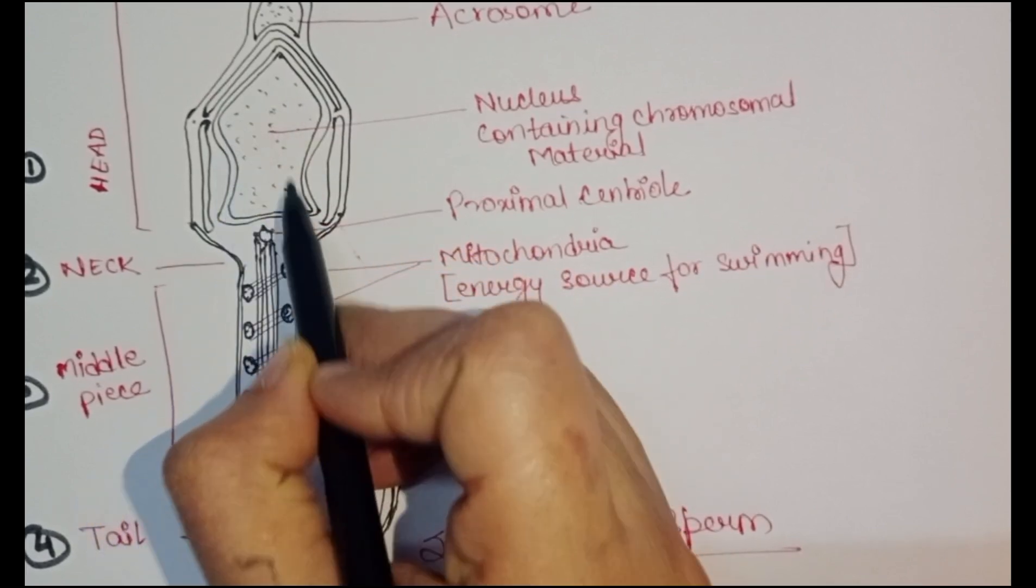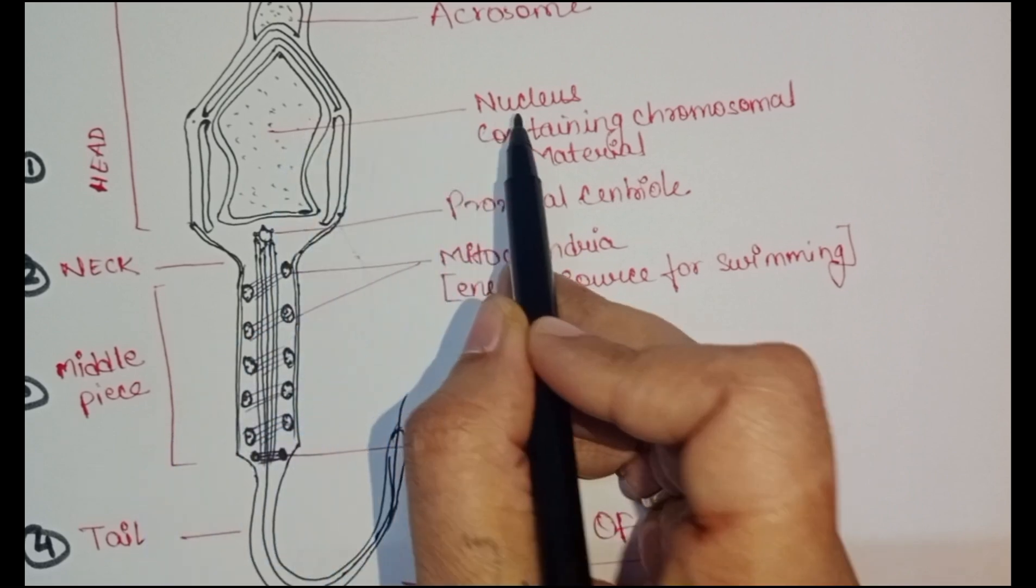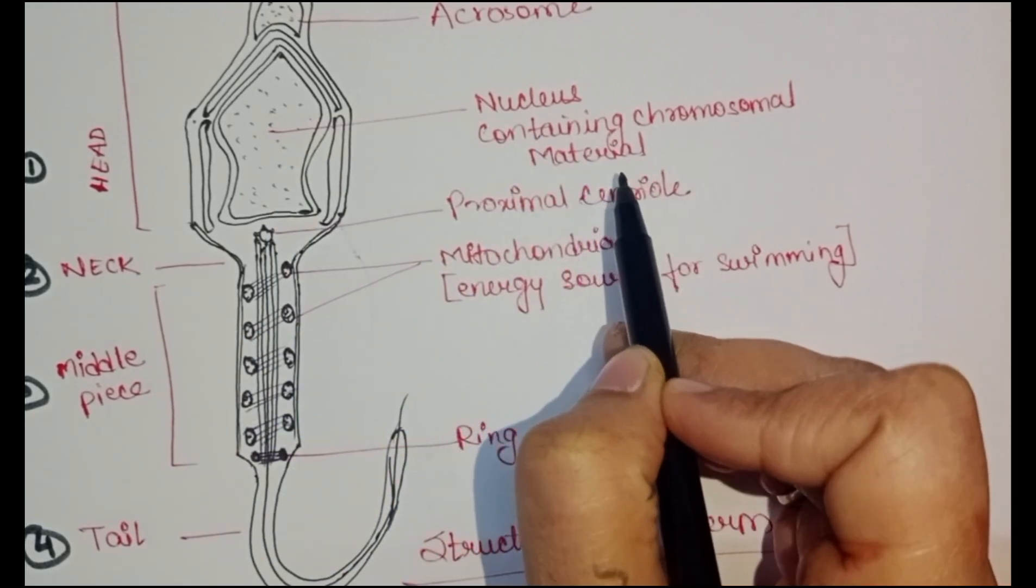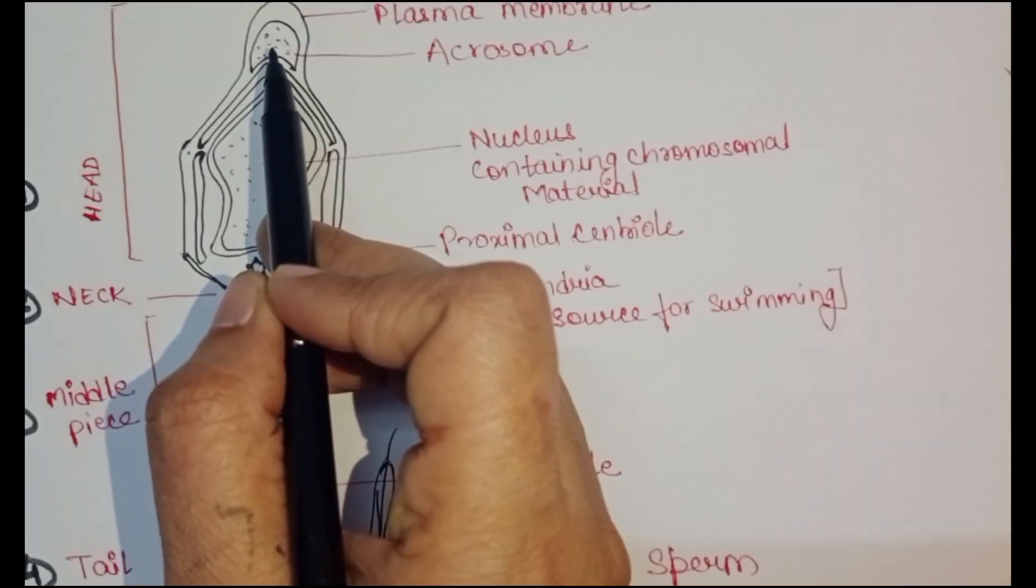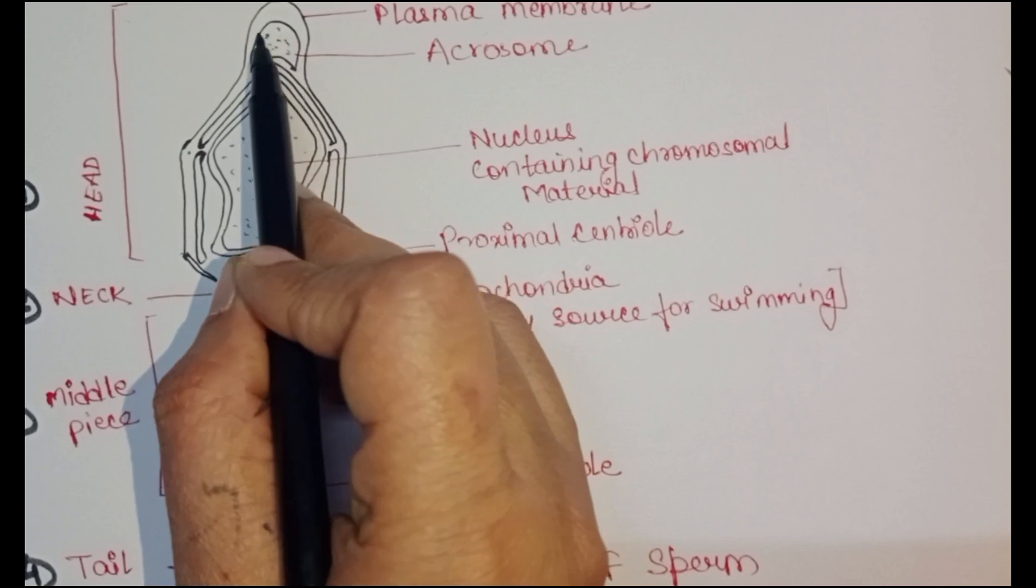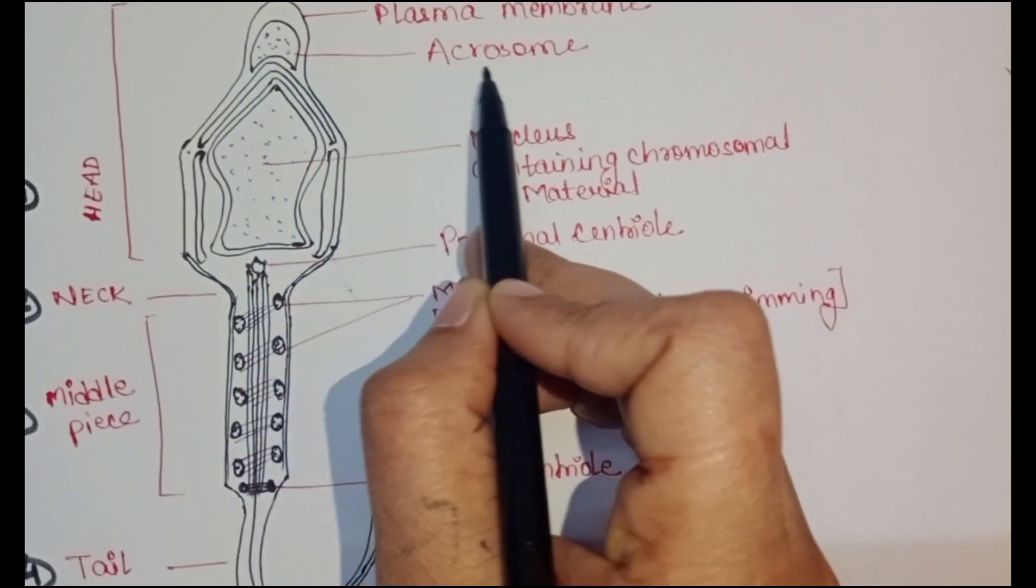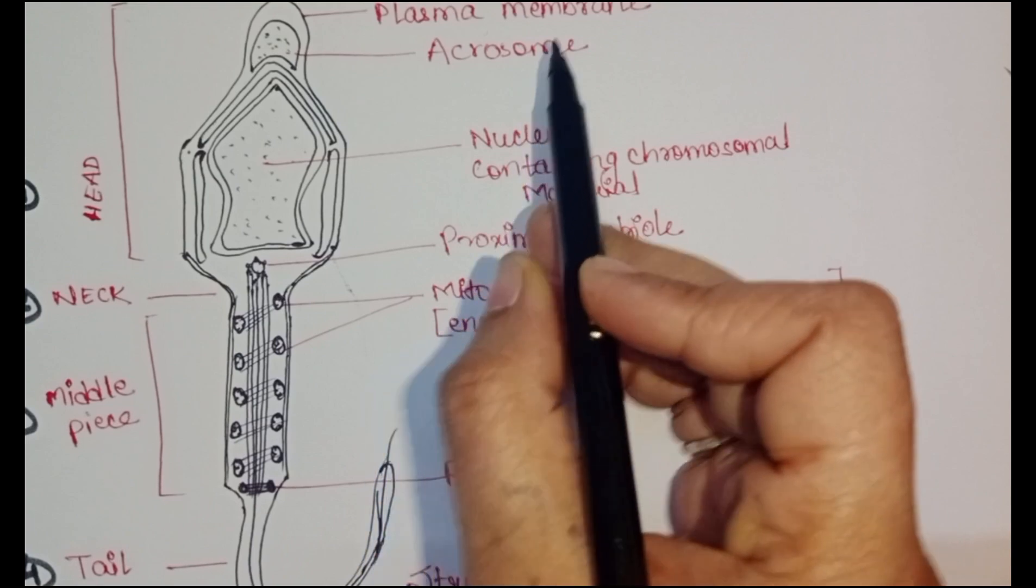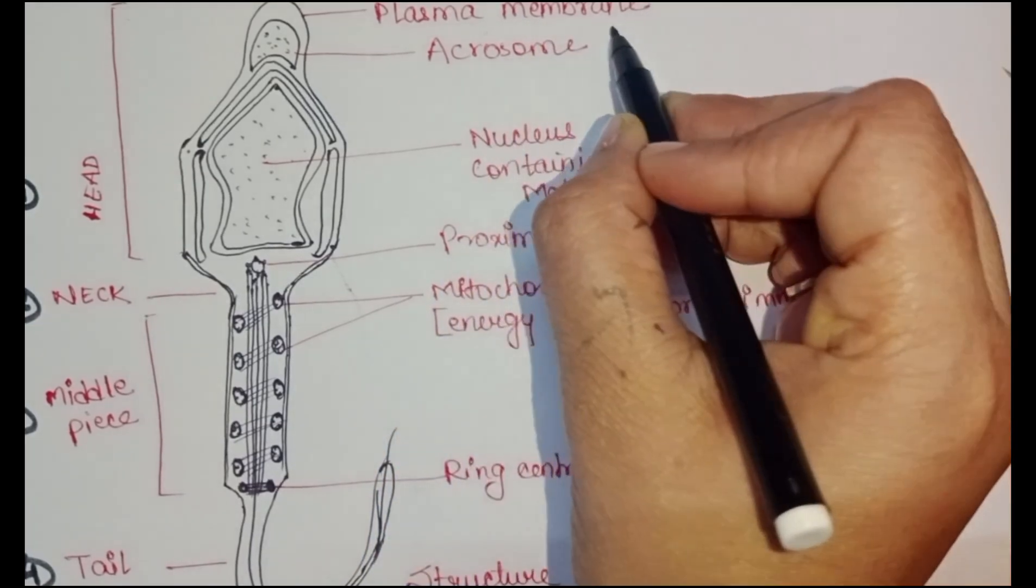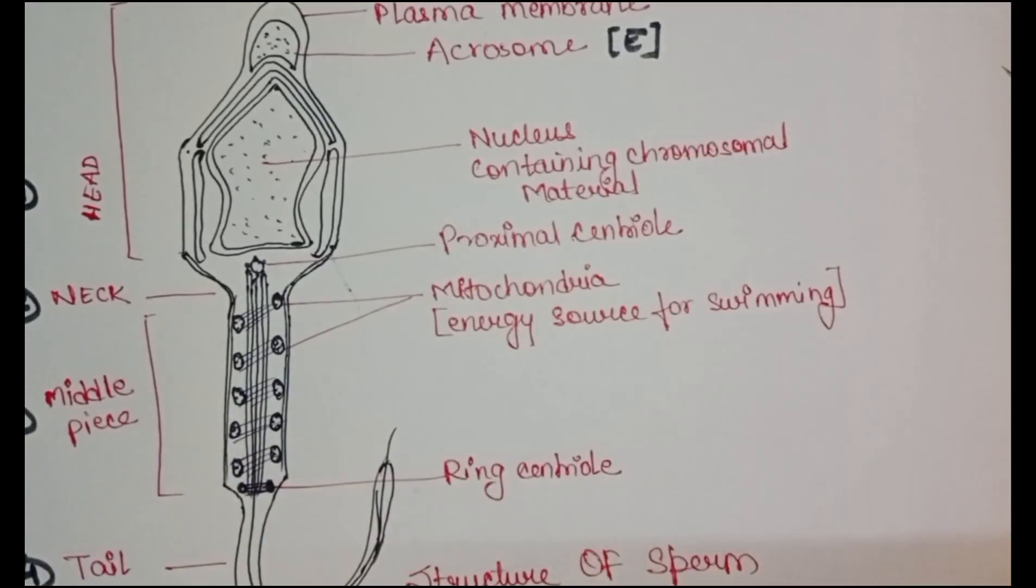This structure is the elongated haploid nucleus of the sperm, which contains the chromosomal material. The anterior portion is covered by a cap-like structure - you can see this cap-like structure is the acrosome. The acrosome is filled with enzymes that help in fertilization.